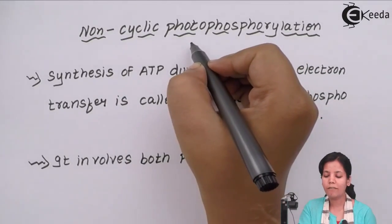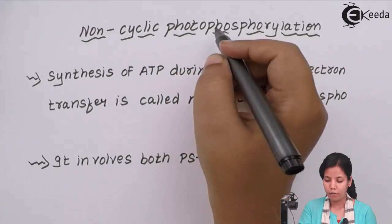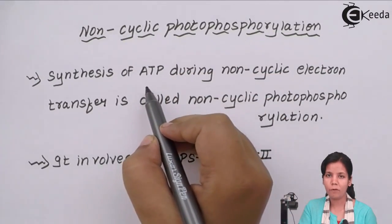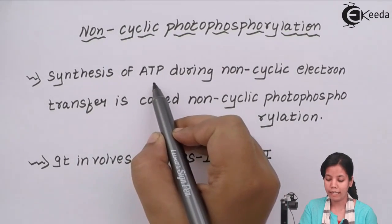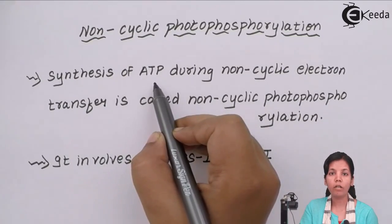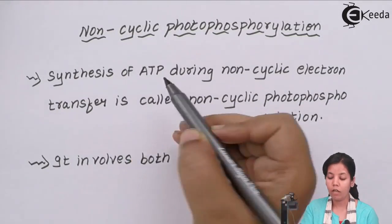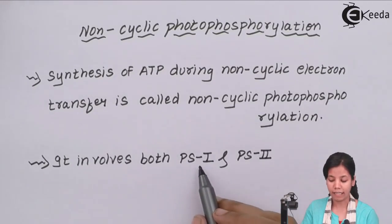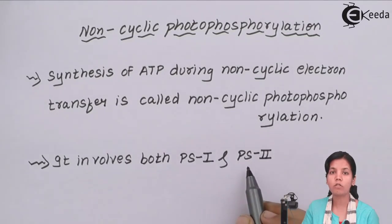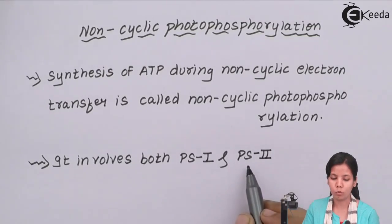During non-cyclic photophosphorylation, ATP synthesis or production takes place and this ATP synthesis is much greater during non-cyclic photophosphorylation. Non-cyclic photophosphorylation uses both the reaction centers, that is PS1 and PS2, pigment system 1 and pigment system 2.